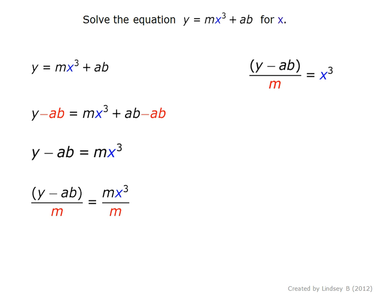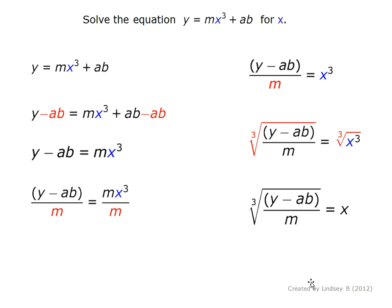Now finally, we want to isolate x, so we want to get rid of this cubed. And so we take the cubed root of both sides, which gives us the cubed root of y minus ab divided by m equals x. Thank you.